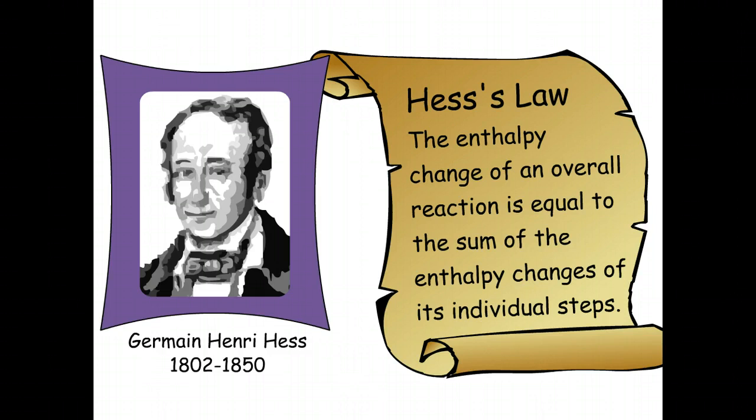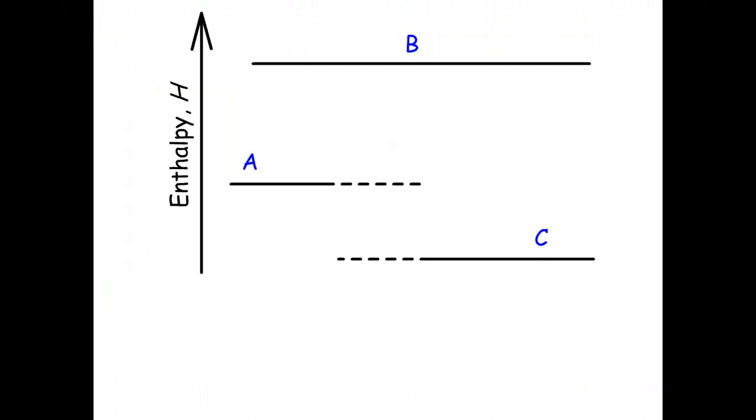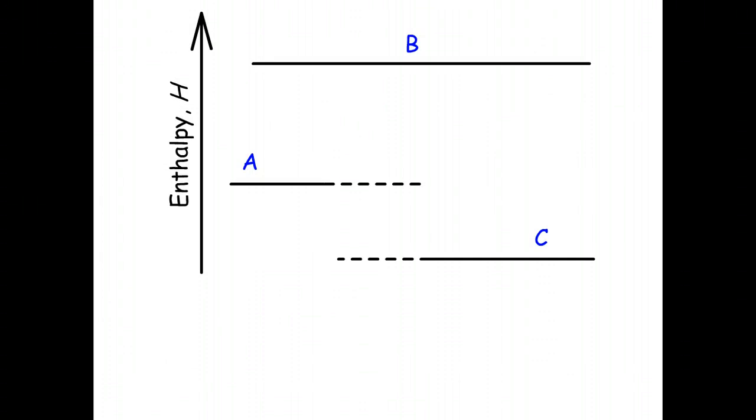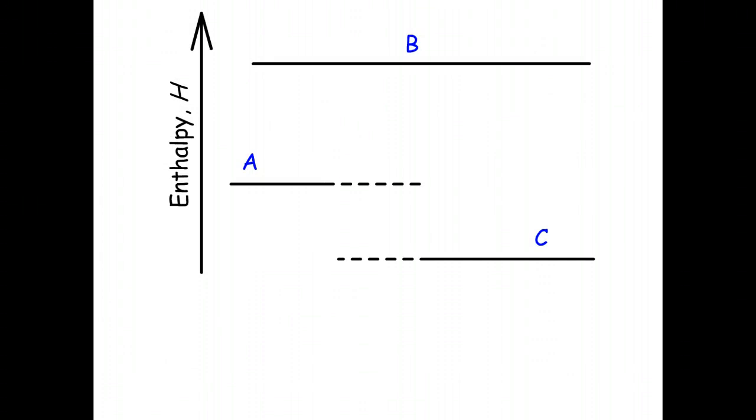There's usually more than one way to get from reactants to products. An enthalpy diagram helps to make clear how the enthalpy changes add up. The vertical axis is the absolute enthalpy, H.